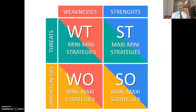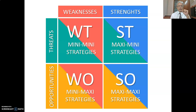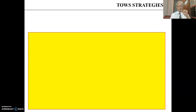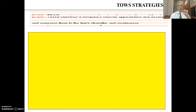On this slide, you can see four sets of strategies. One is the mini-mini strategy — strategies to address weaknesses as well as threats. Then strategies to minimize threats while taking advantage of strengths, strategies to minimize weaknesses while exploiting opportunities, and strategies leveraging strengths to take advantage of opportunities. These four categories are: mini-mini, maxi-mini, mini-maxi, and maxi-maxi strategy.